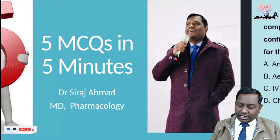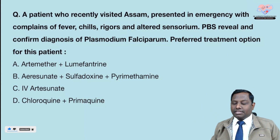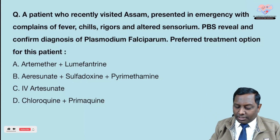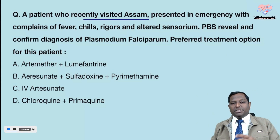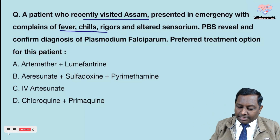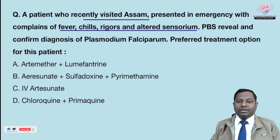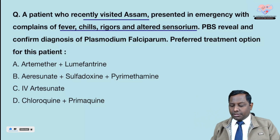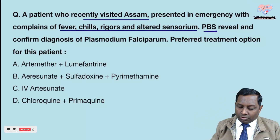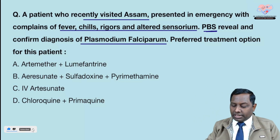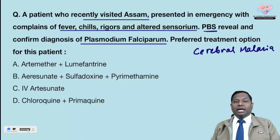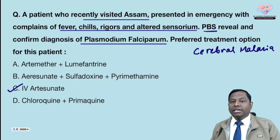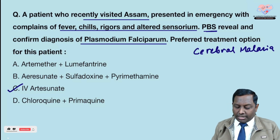The very first question is about a patient who recently visited Assam, presenting with fever, rigors, chills, and altered sensorium. Whenever there is fever, rigors, and chills with altered sensorium, and peripheral blood smear confirms Plasmodium falciparum, this is a case of cerebral malaria. The drug of choice for cerebral malaria is IV artesunate — we will be giving IV artesunate to the patient immediately.